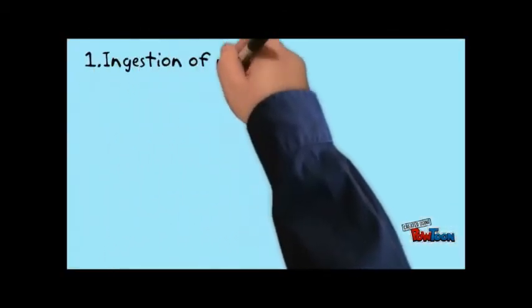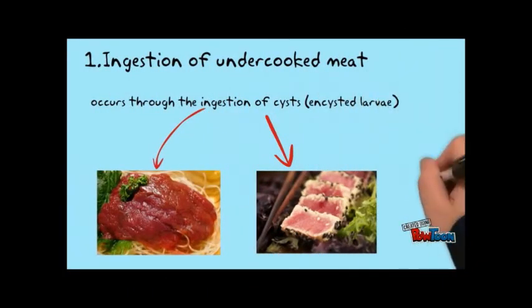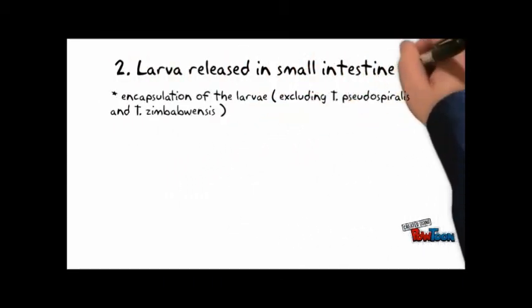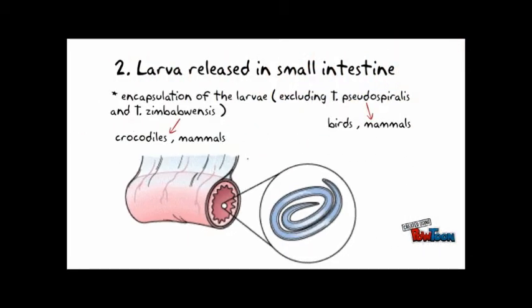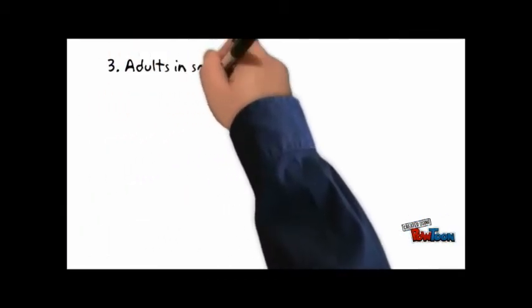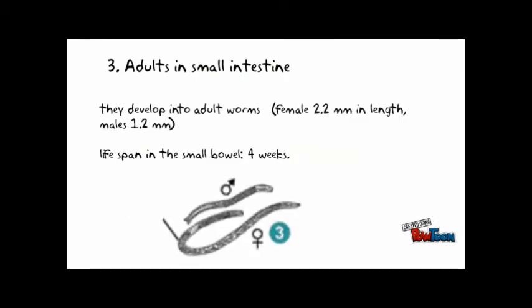Life cycle of Trichinella spiralis. First, ingestion of undercooked meat, followed by excystment through the ingestion of larvae. Second, larvae are released in the small intestine, and encapsulation of larvae occurs. Third, adults develop in the small intestine. They develop into adult worms, and the lifespan in the small bowel is about four weeks.